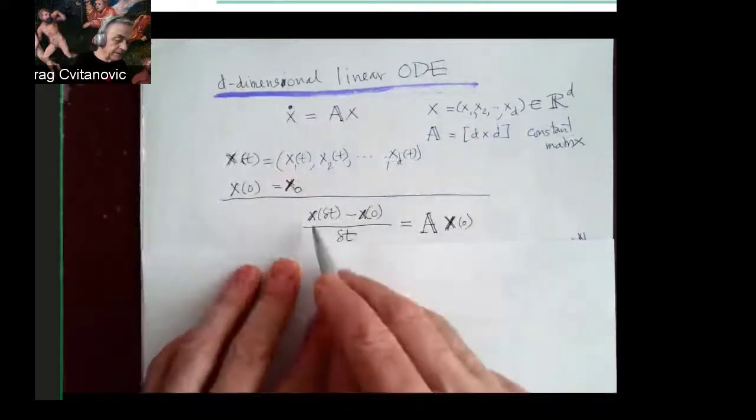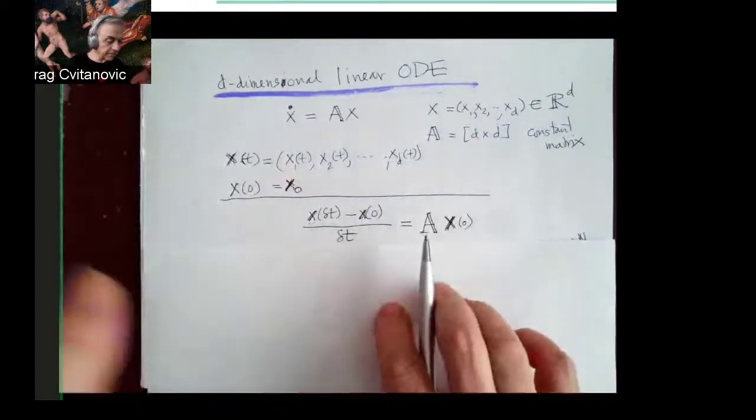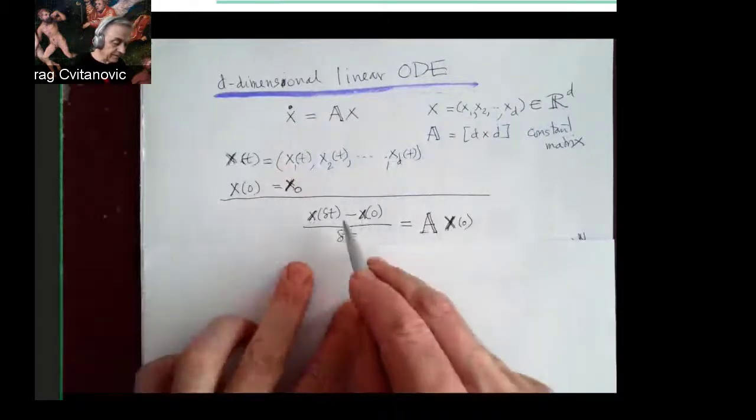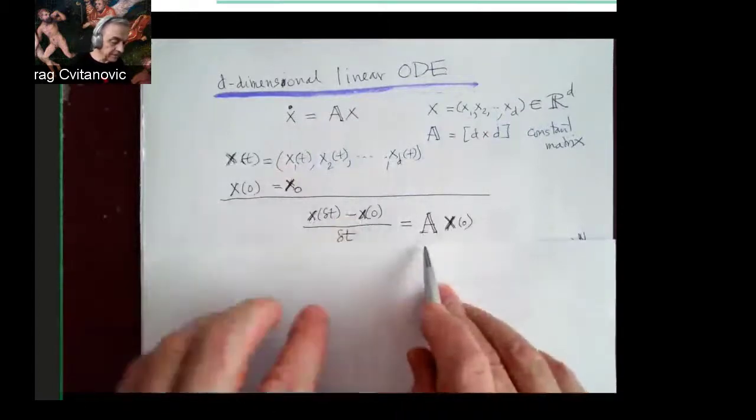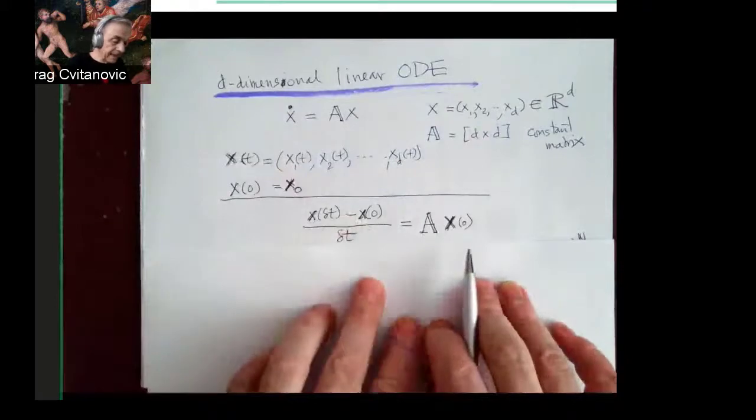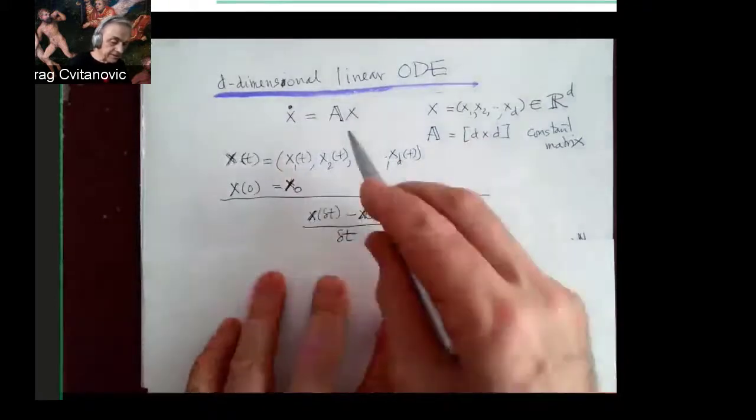I take the time derivative just like I did before, but now it's a vector difference. So this is in D-dimensional space. It's a little difference vector divided by delta tau. And that's discretization of this equation.